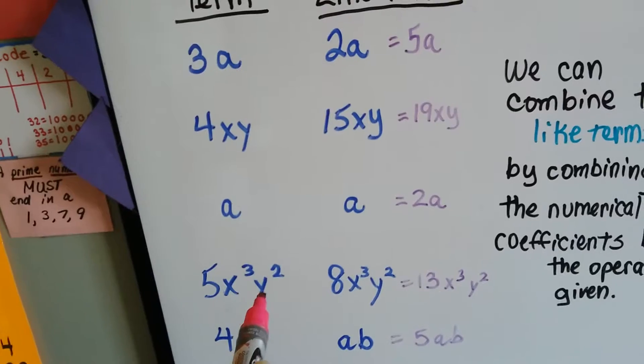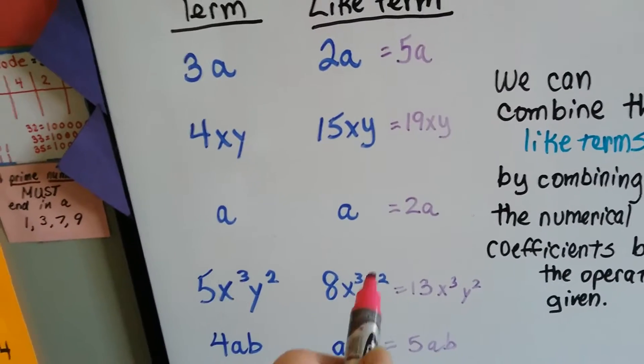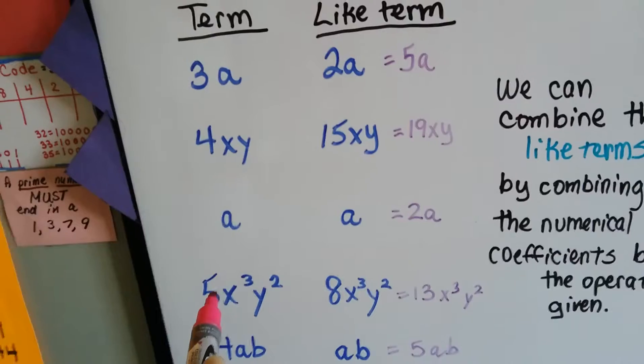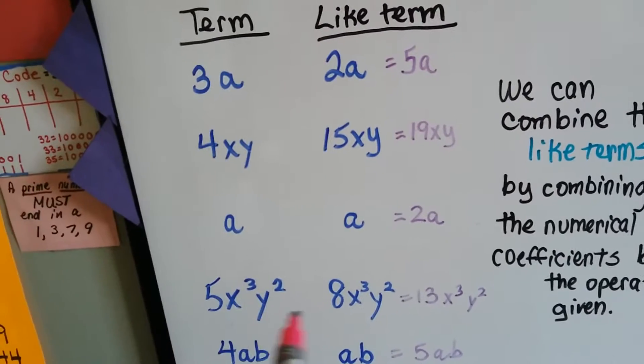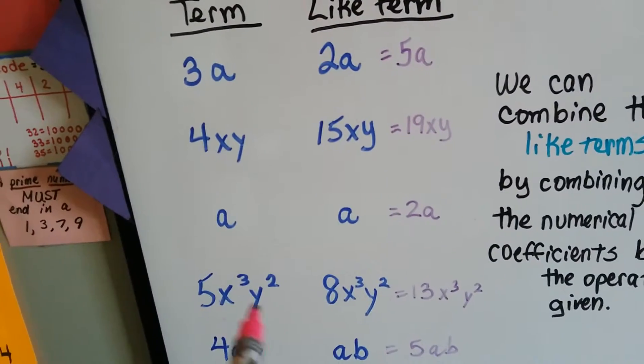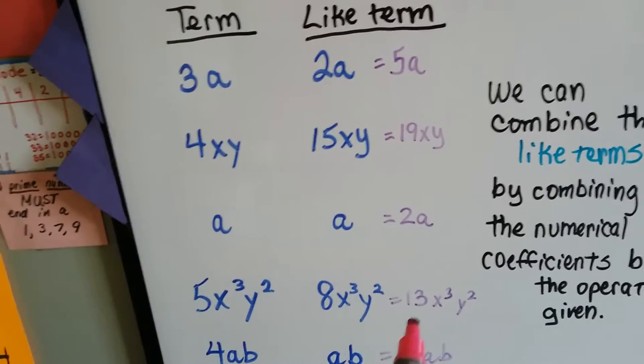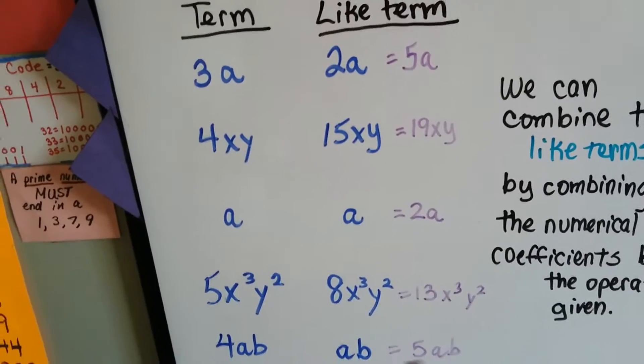5x cubed y squared and 8x cubed y squared are like terms. They have the same numerical coefficient and the same exponents with the same variables. If we added them together, we'd have 13x cubed y squared.